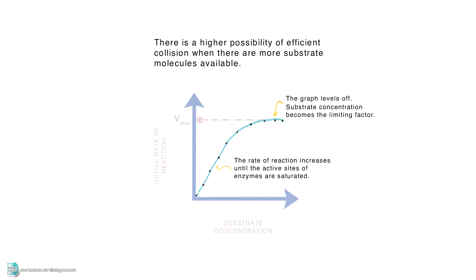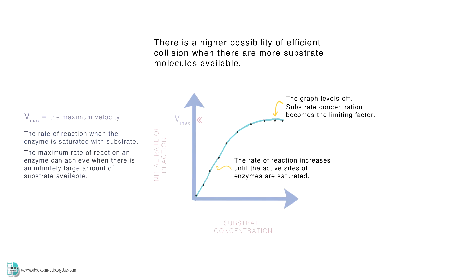Vmax is the maximum velocity. It is the rate of reaction when the enzyme is saturated with substrate. In other words, this is the maximum rate of reaction an enzyme can achieve when there is an infinitely large amount of substrate available.